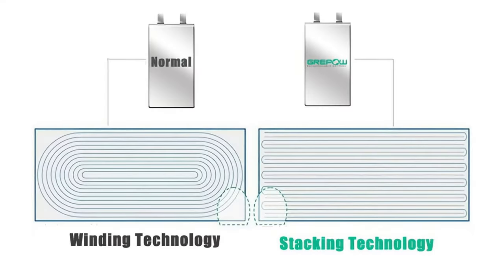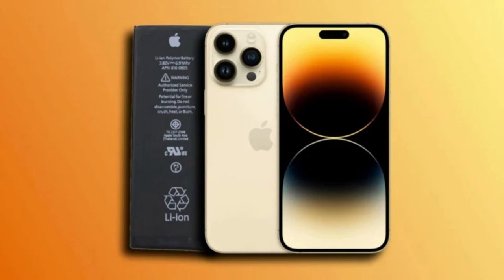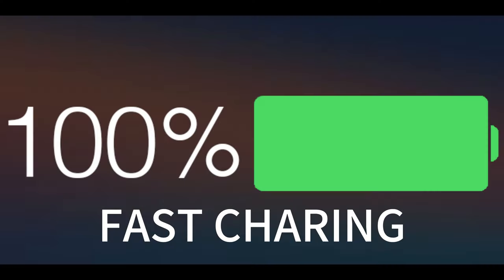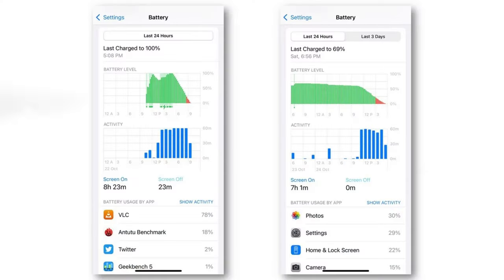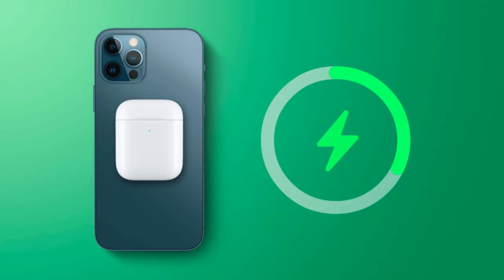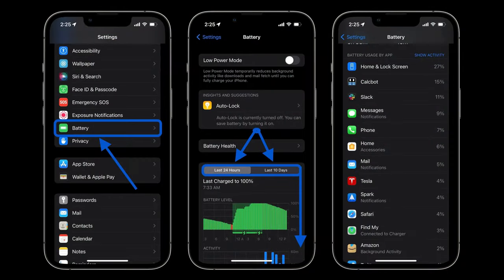It is reported that the iPhone 15 series may use stacked battery technology to increase energy density and extend battery life. Stacking batteries enables more capacity, fast charging, battery health management, reverse charging, and improved battery safety.